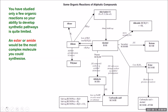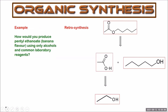You've only studied a few organic reactions so far, which means your ability to develop synthetic pathways is limited at this stage. Probably an ester or an amide is the most complex molecule you could be asked to synthesize. Let's look at an example: how would you produce pentyl ethanoate, which is used as a banana flavor, using only alcohols and common laboratory reagents? Looking at the structure of pentyl ethanoate, we can see it's an ester. We know how to make an ester from a carboxylic acid and an alcohol. Breaking the ester link, we can see it would be made from ethanoic acid and pentan-1-ol.